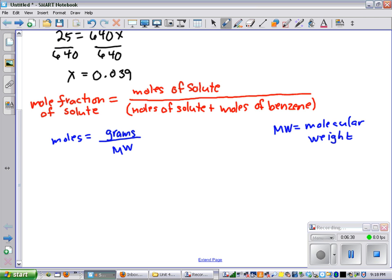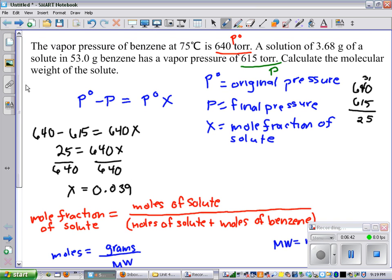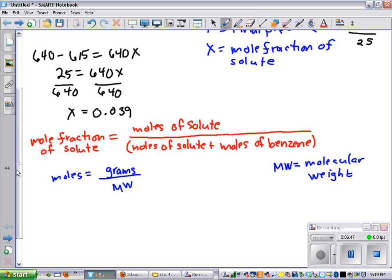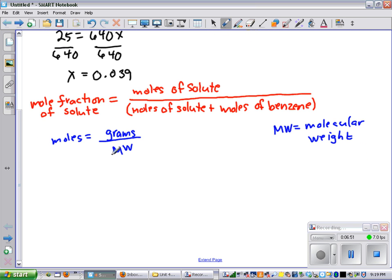And remember, back in the problem it told us that we have 53 grams of benzene. We know for benzene that moles equals 53.0 grams divided by 78.0 grams per mole. This is the molecular weight of benzene. And that equals 0.679 moles of benzene.